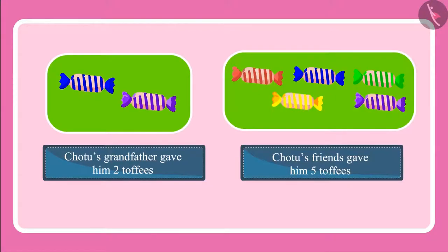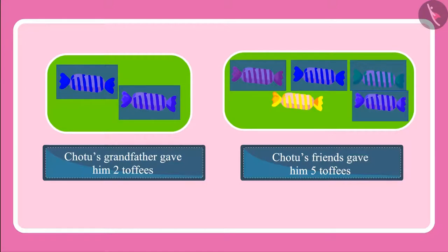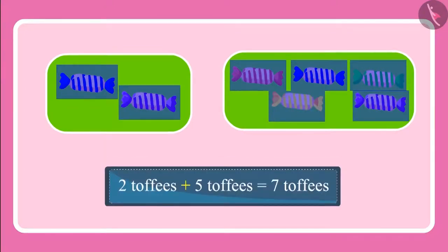Come children, let's count and see. One, two, three, four, five, six, seven. This means Chotu now has seven toffees with him.